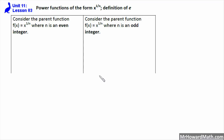In this video, we're going to look at power functions of the form x to the 1 over n — in other words, where we have a fractional exponent with the numerator always being 1. For example, x to the 1 half, x to the 1 third, x to the 1 fourth, x to the 1 fifth, etc.